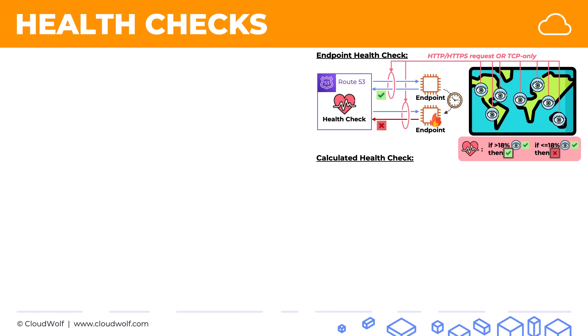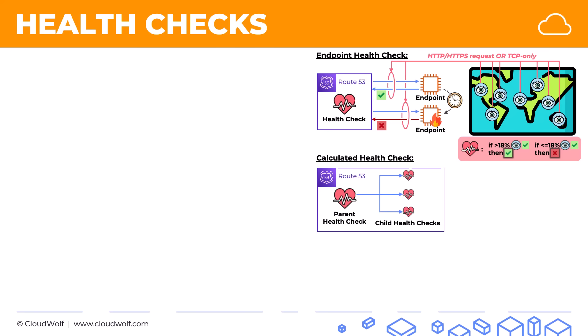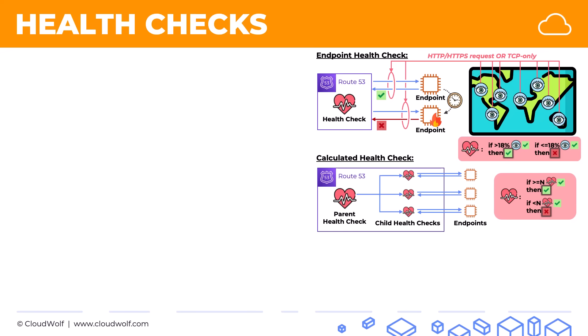The second type of health check is the calculated health check, which is quite simple. We've got a parent health check with child health checks — the child health checks are the ordinary endpoint health checks monitoring their endpoints. A parent health check is considered healthy when at least a certain number of these child health checks pass, and unhealthy if less than that number pass. You would use this if you have three different servers running the same thing and you want to make sure that at least two of them are running at any given point in time.